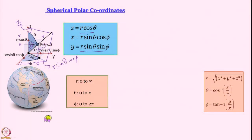Spherical polar coordinates are introduced early in school. If you think of a globe — latitude and longitude — r is constant at the Earth's surface. θ is related to latitude but not identical: θ = 90° − latitude, since latitude is measured from the equator (range +90° to −90°). φ is exactly longitude, going around in the equatorial plane.